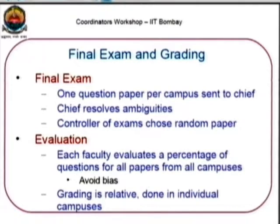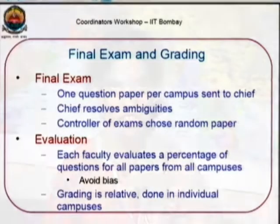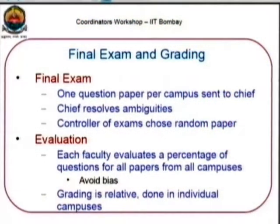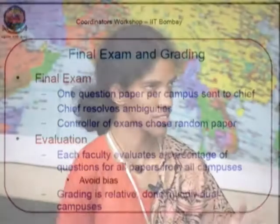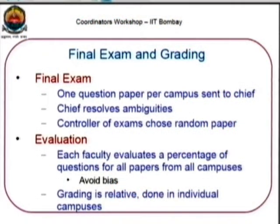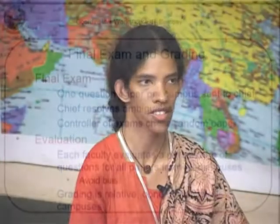For the final exam, each campus comes up with a question paper, the chief mentor resolves any issues between the three papers, and then sends them to the chief examiner. One question paper is chosen and given to all campuses. Evaluation is done by all faculty teaching this course — some percentage of questions are graded by all faculty so there is no bias among campuses. Once evaluation is done, grading is done according to each institute's relative grading system in the individual campuses.